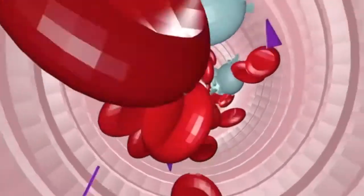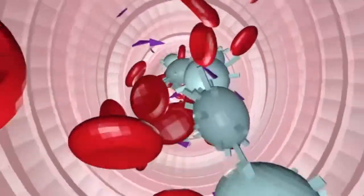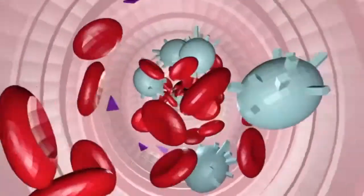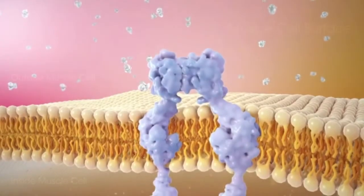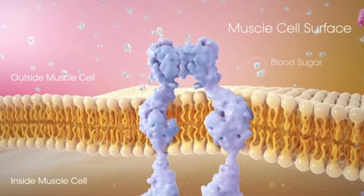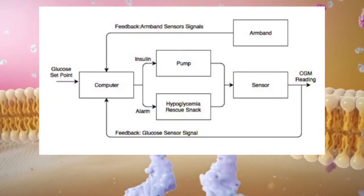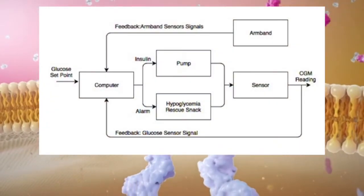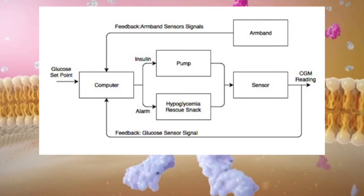A second artificial pancreas design was developed in 2015 that took into account additional variables such as stress levels, sleep, and physical activities of the patient. The model for the artificial pancreas system can be seen here and contains two separate feedback loops for the system.